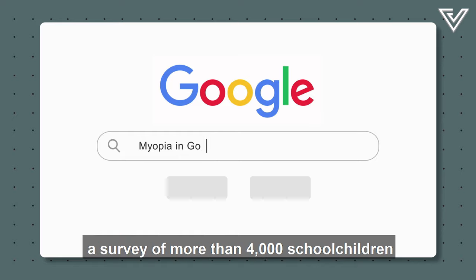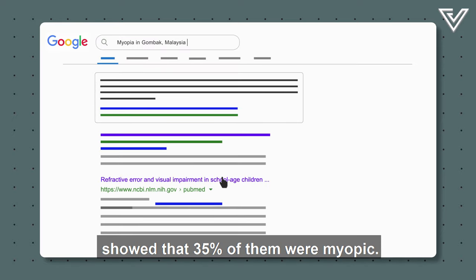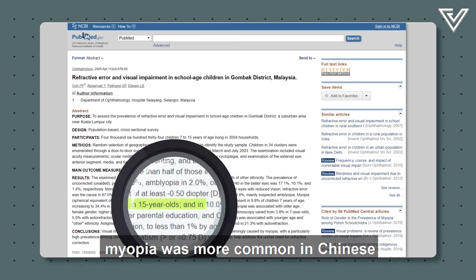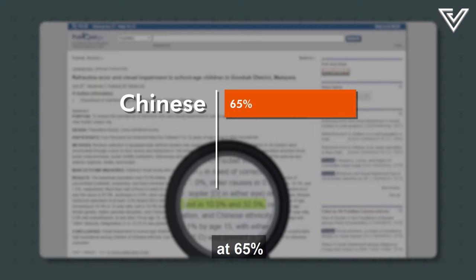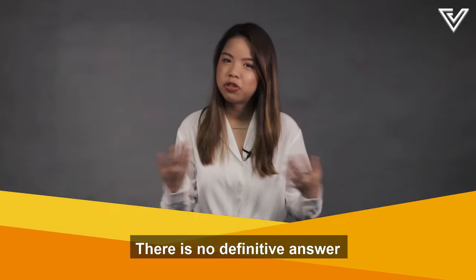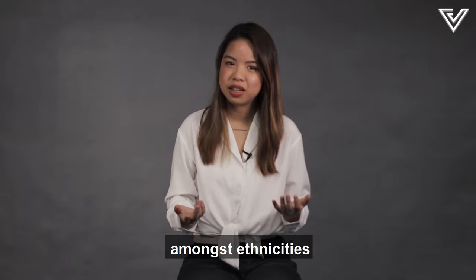In 2003, a survey of more than 4,000 school children in Gombak showed that 35% of them were myopic. Among the 15-year-old age group, myopia was more common in the Chinese at 65%, followed by Malays at 30% and Indians at 16%. There's no definitive answer as to why myopic rates are so different amongst ethnicities. But researchers suggest that environmental factors may contribute to it.